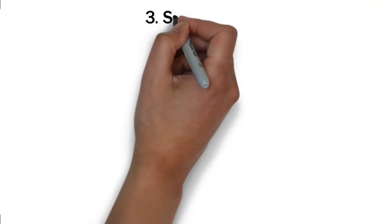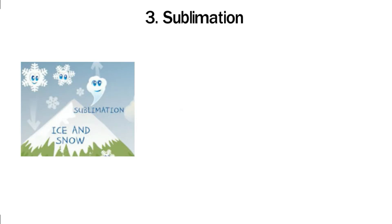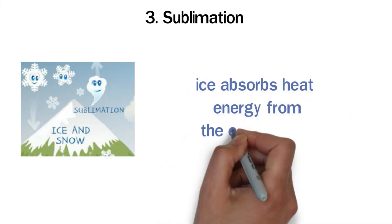3. Sublimation. Sublimation is the process through which ice changes to water vapor directly without melting first. This process occurs when ice absorbs heat energy from the environment.